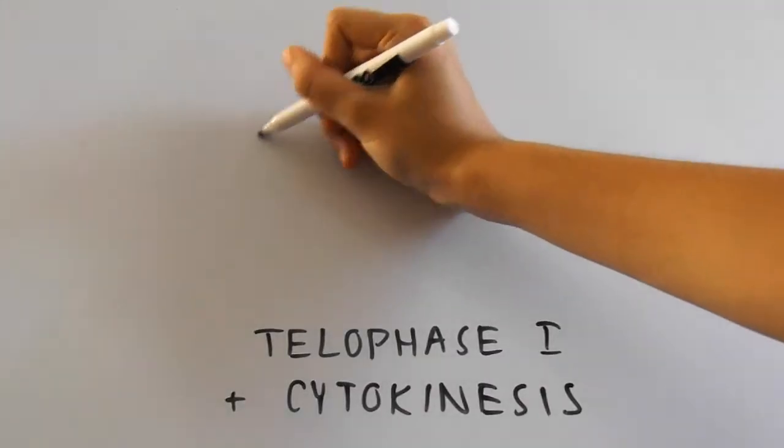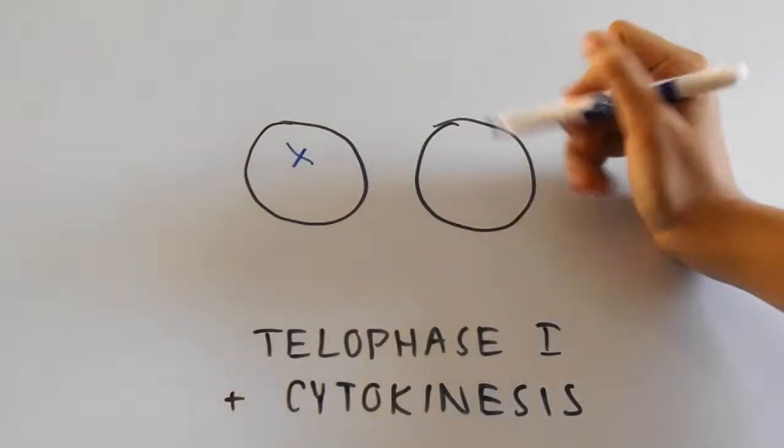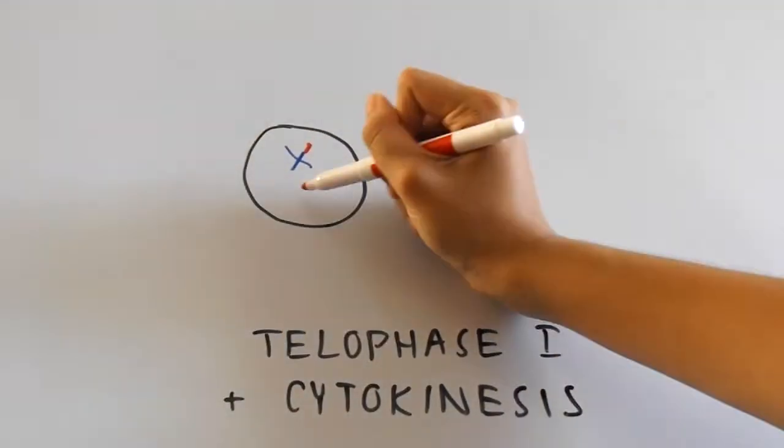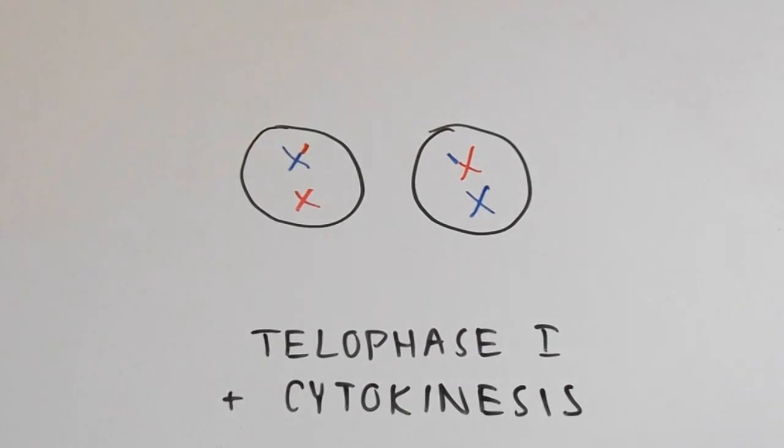During telophase and cytokinesis, the resulting chromosomes will be separated into two different cells. Notice that these consequential cells aren't exactly the same like in mitosis because of crossing over and different genes from parents.